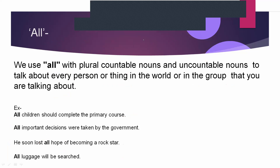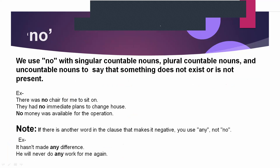Just opposite to 'all' is 'no.' While 'all' means everything, 'no' means absolutely nothing — something that does not exist. We can use 'no' with singular countable nouns, plural countable nouns, and uncountable nouns — all three types.